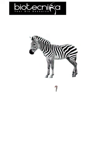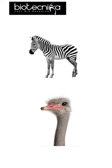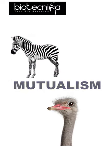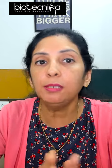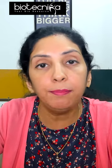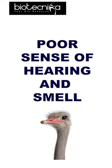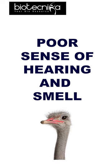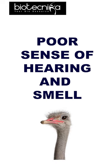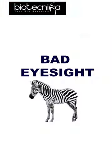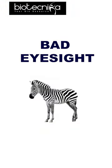But do you know, zebra and ostrich present an interesting example of mutualism? These two animals remain differently abled. Where ostriches are known to have a poor sense of hearing and smell, zebras are known to have bad eyesight.